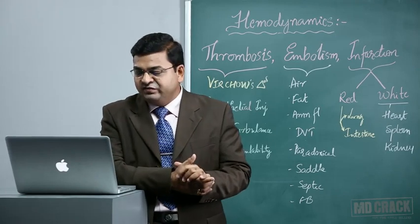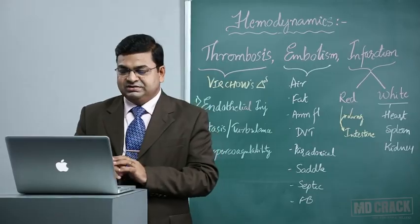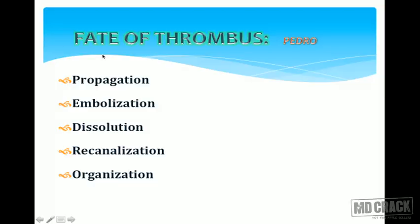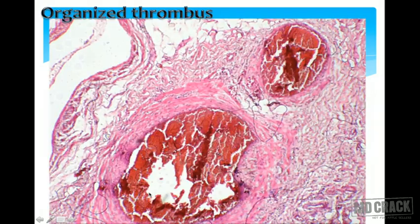Once a thrombus is formed, it will have one of these fates — remember the mnemonic PEDRO: Propagation from the site of origin, Embolization, Dissolution due to fibrinolytic activity, Re-canalization of the thrombus within the vessel, and Organization of the thrombus. Under light microscopy, an organized thrombus within a blood vessel should show firm attachment to the endothelial cell lining. If there is no attachment, it is a postmortem clot.